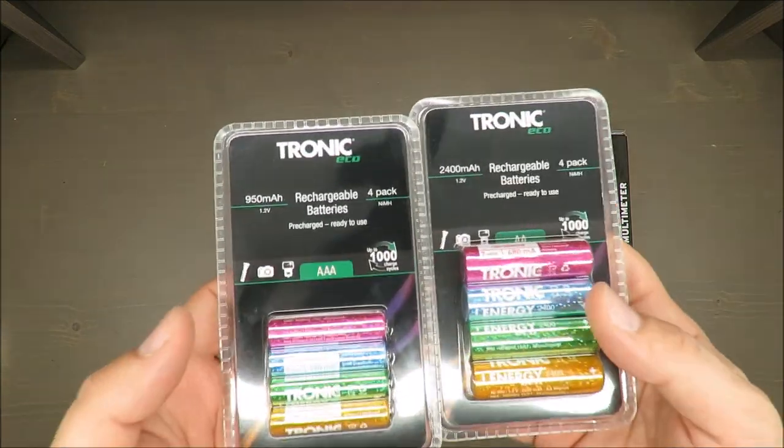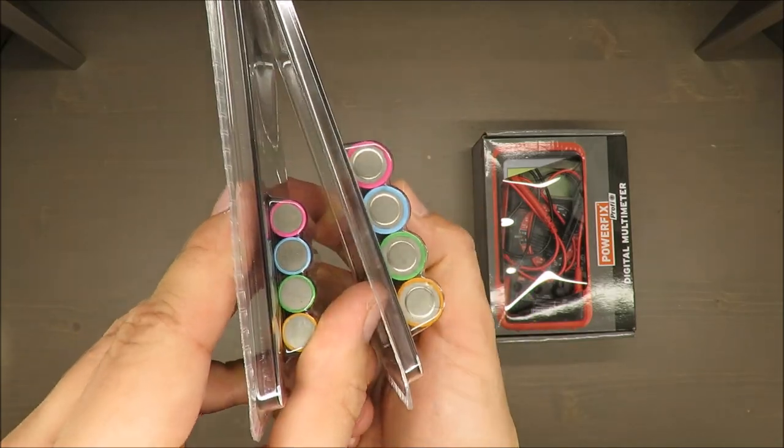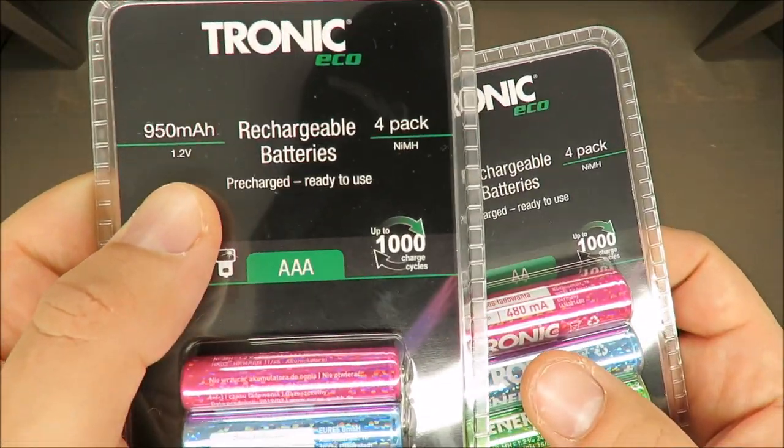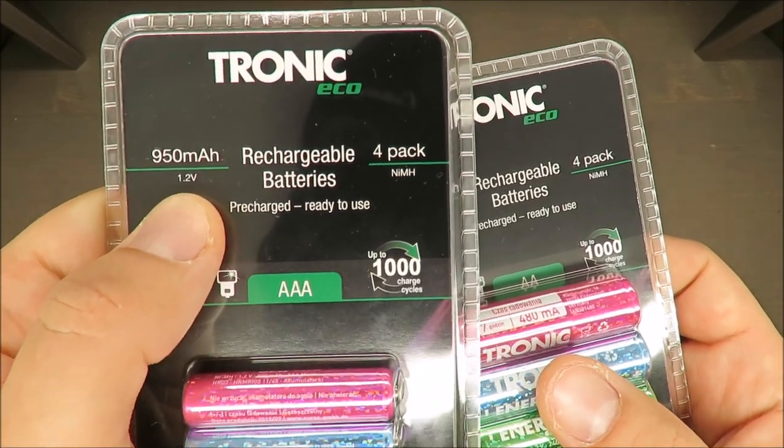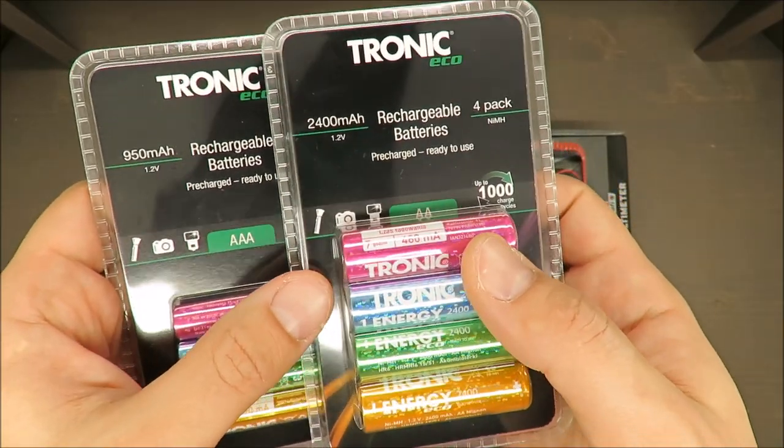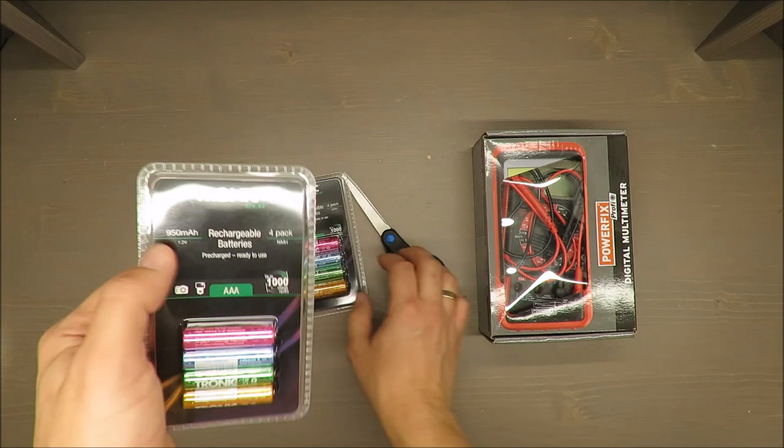As you can see, I have two types - AAA smaller ones and AA bigger ones. The smaller ones have almost 1000 milliampere hours and the double A have 2400, which is a lot I have to admit.